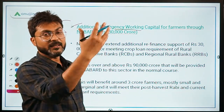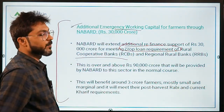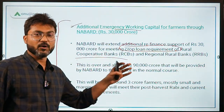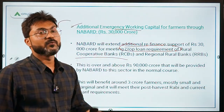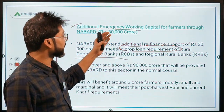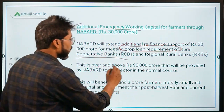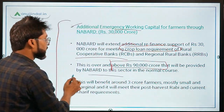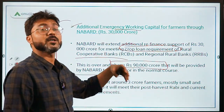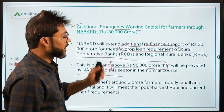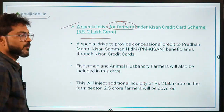The ₹30,000 crore to NABARD was over and above the ₹90,000 crore that NABARD normally provides to this sector. Under the Kisan Credit Card scheme, a special drive worth ₹2,000 crore was announced to provide concessional credit to PM Kisan Samman Nidhi beneficiaries through Kisan Credit Cards.